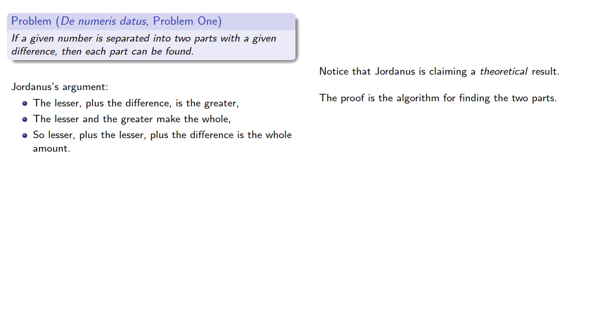Now, this verbal algebra of Jordanus may be a little difficult to follow. So let's anachronistically introduce some modern notation. So note that we've separated a given number into two parts. So we actually know the sum of the two parts. Yes, that's a given, and we're given the difference. Then the larger of the two numbers is the smaller plus whatever the difference is. Now since we know the sum of the two numbers, we can replace the larger of the numbers with the smaller plus the difference, and that gives us an algebraic equation we can solve.